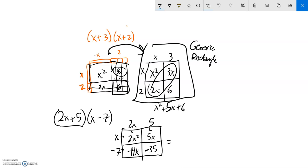And so notice my answer would be 2x squared. And if I have negative 14x plus 5, I have 14 negatives, but 5 positives. So those 5 positives will cancel out 5 of those negatives, leaving me negative 9x minus 35. So that's how generic rectangles work.